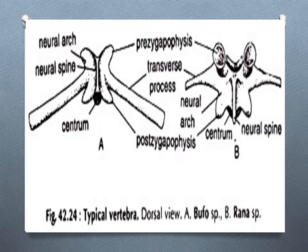This slide shows the typical vertebra — a dorsal view of Bufo and Rana species of amphibians — where you can see the prezygophysis and postzygophysis, which are the processes of the neural arch of a vertebra by which it articulates with an adjacent vertebra.